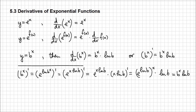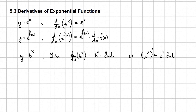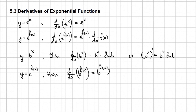Let's conclude with a final rule that will encompass basically any exponential function. So we're going to have y equals b^f(x) — any base other than e, obviously positive and different than 1, with the power being an expression f(x). The derivative d/dx of b^f(x) is going to be b^f(x) times ln(b) times the derivative of that function f(x).